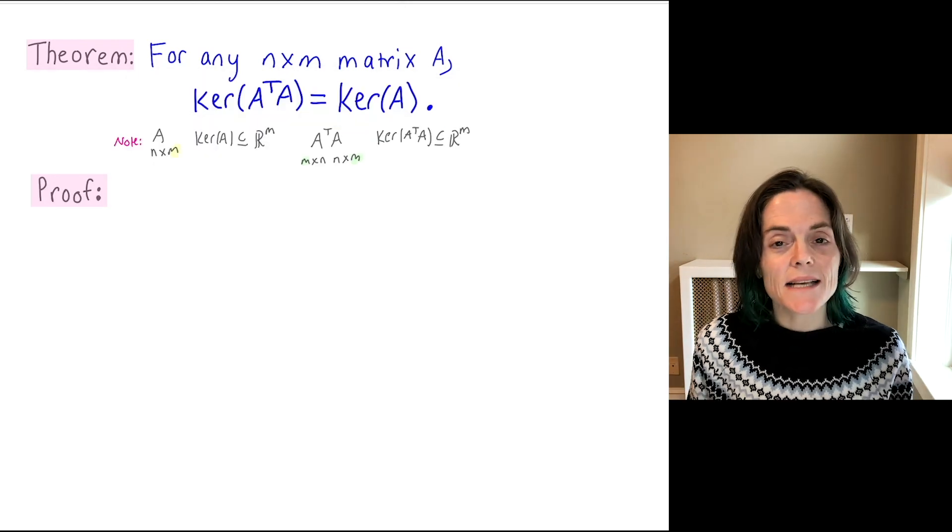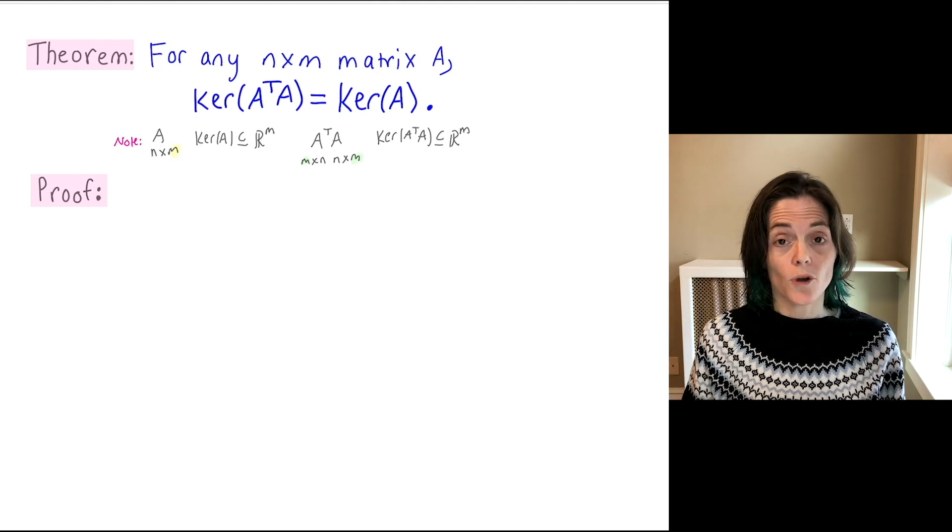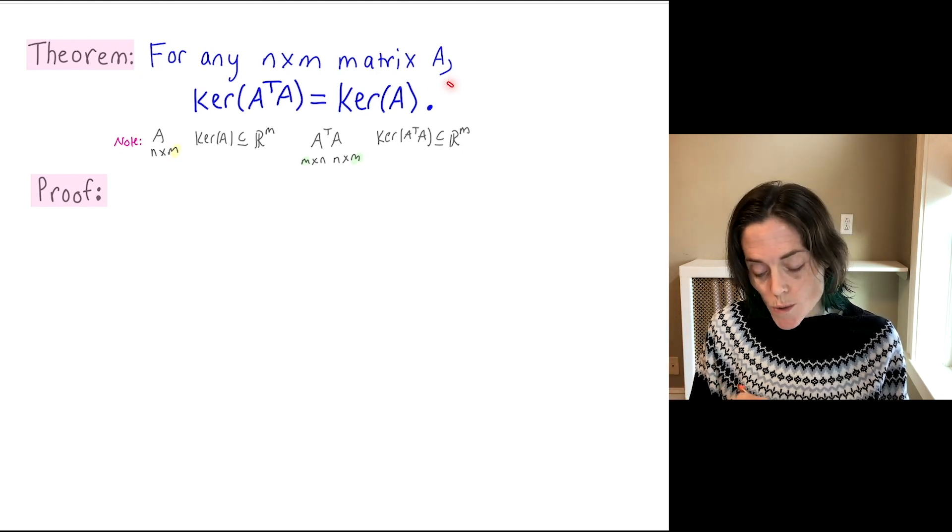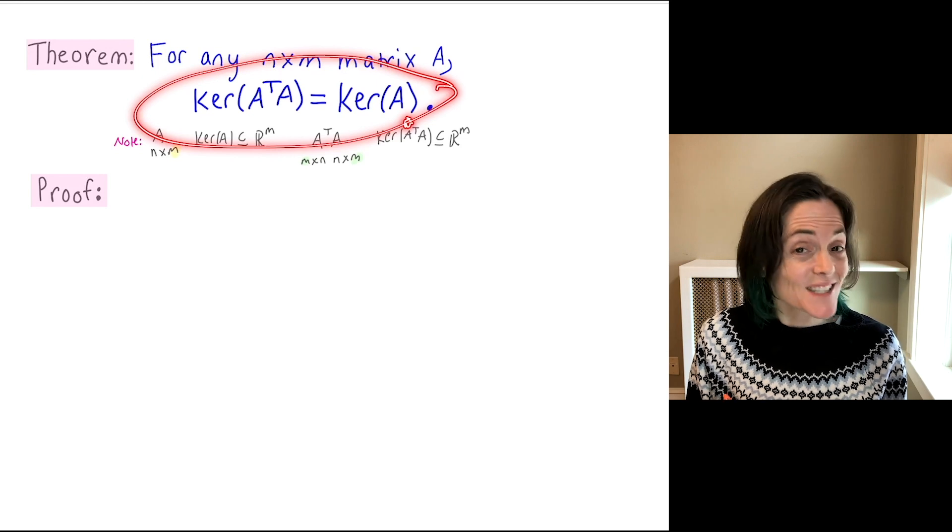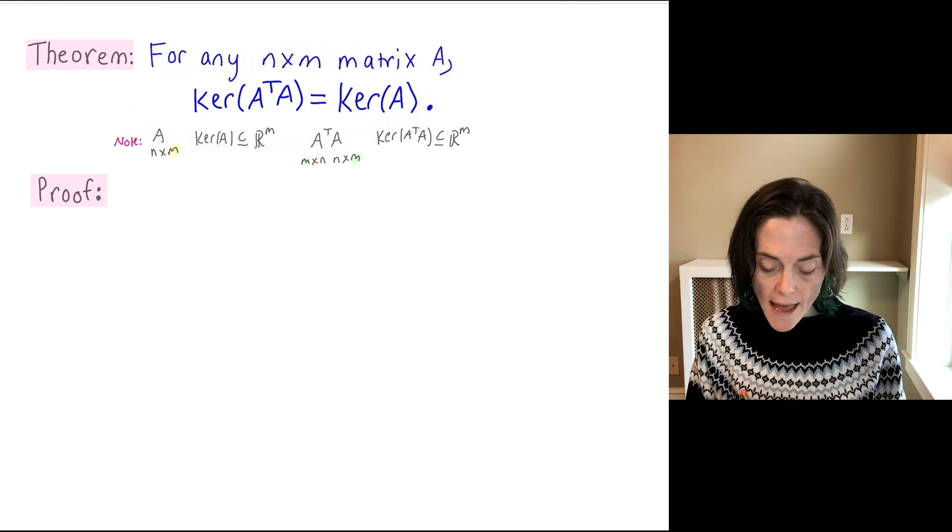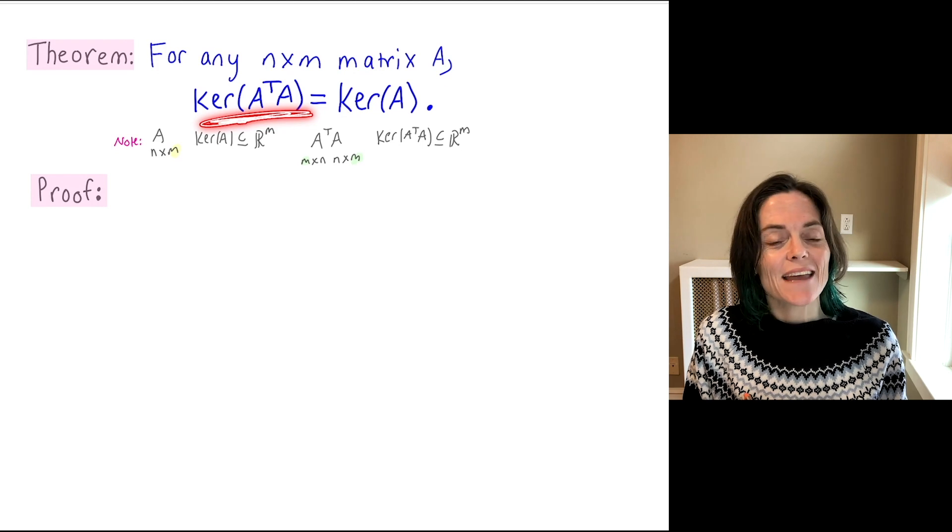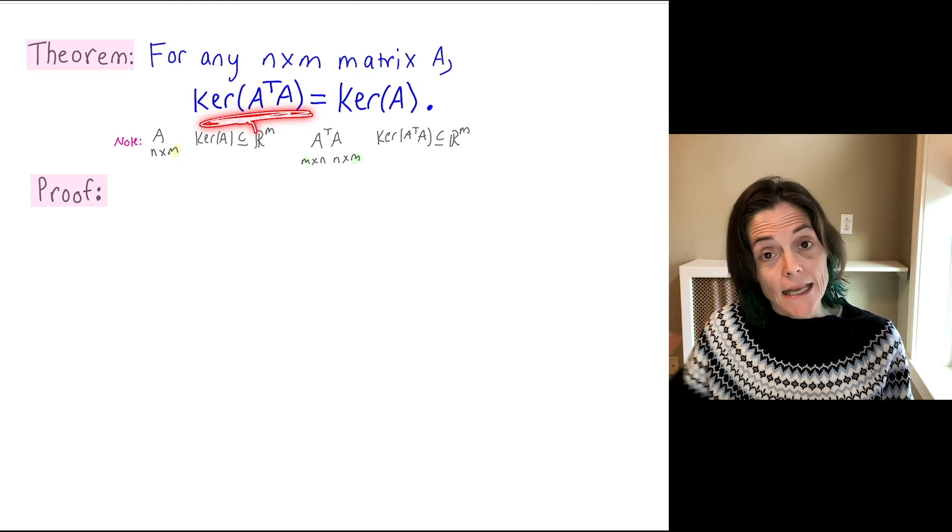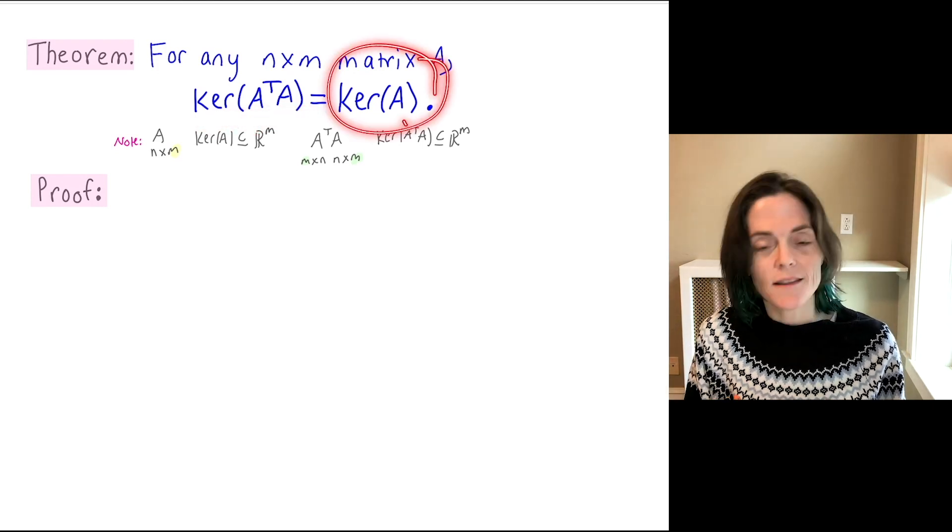So how does a set theoretic proof go? Well, in order to show two sets are equal, in this case, the sets are subspaces, I need to show that every vector in the kernel of A transpose A is also a vector in the kernel of A.